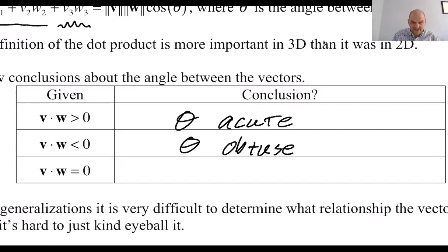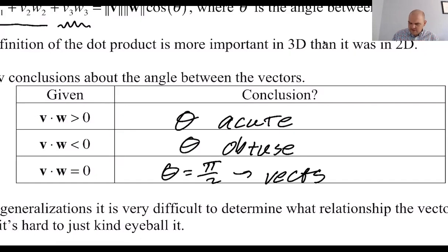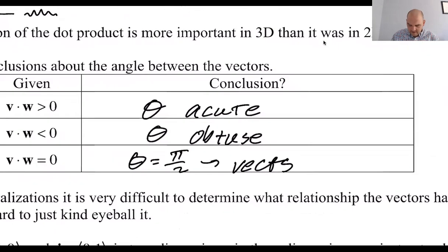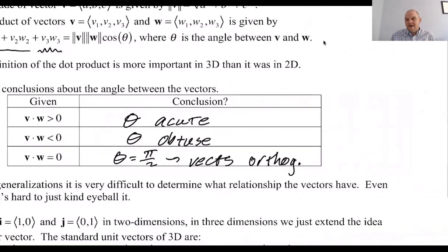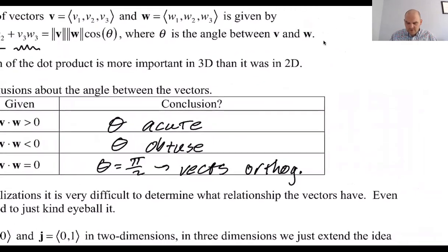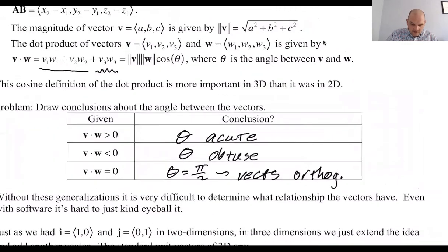I won't say theta is pi over two — I'll just say the vectors are orthogonal, which I'm definitely going to abbreviate as 'orthog.' So why is this the case? Going back to our dot product formula up here, I can rearrange it: cosine of theta equals u dot v over the magnitude of u times the magnitude of v. And then to find theta, I have to take the inverse cosine.